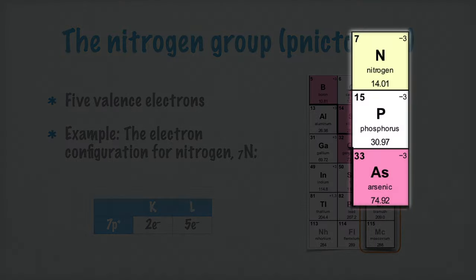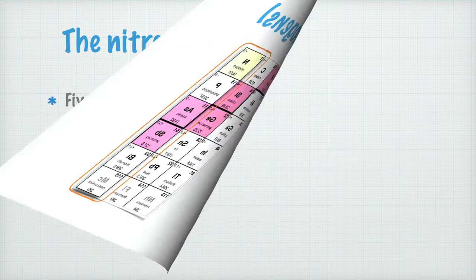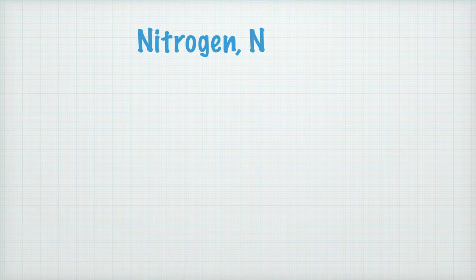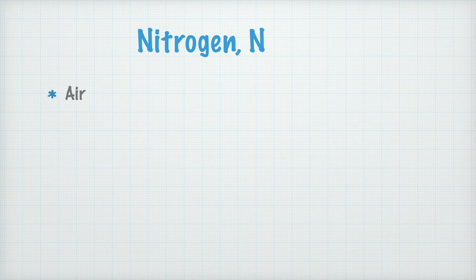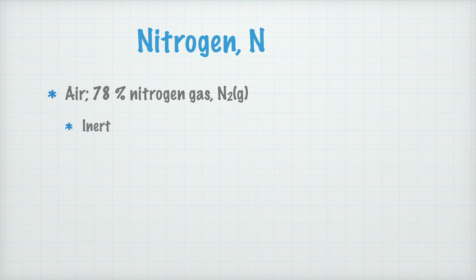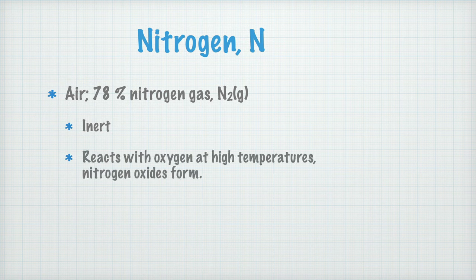This means that at least nitrogen, phosphorus and arsenic can take up 3 electrons each, and form nitride, phosphide and arsenide ions, with 3 negative charges. Nitrogen is by far the most common gas in our atmosphere, which consists of approximately 78% nitrogen gas. Nitrogen gas is inert, which means it is very stable and doesn't easily react with anything at all. At very high temperatures, like for example in lightning or combustions, it may however react with oxygen, and form different forms of nitrogen oxides.